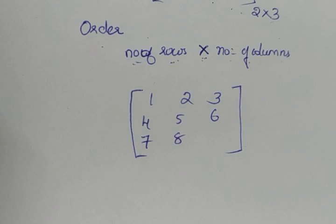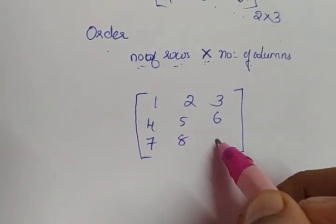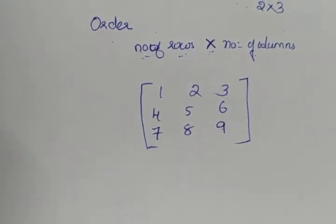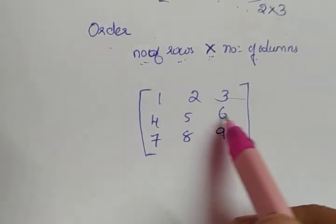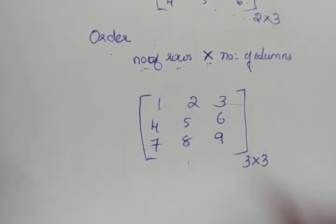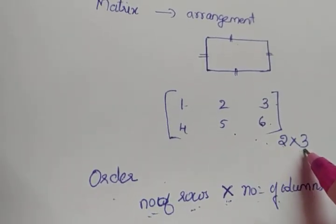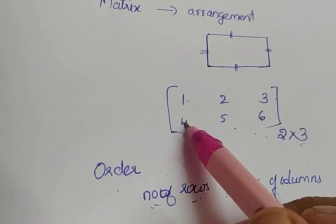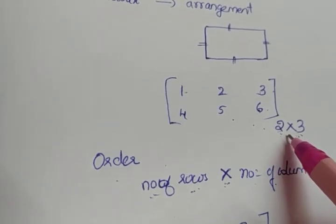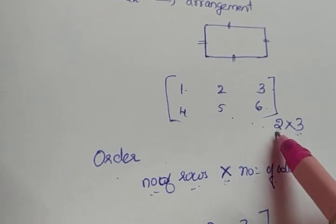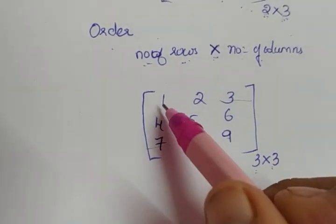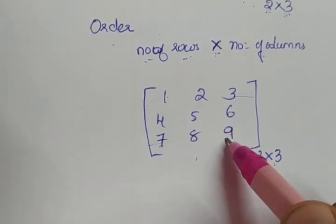If there is a gap in the arrangement, it will not be a matrix. Filling the gap makes it a matrix. The order means number of rows by number of columns — three rows by three columns, so three by three. For the first example of order two by three, there are six elements, and two into three also gives six. For the three by three matrix, there are nine elements and three into three also gives nine.